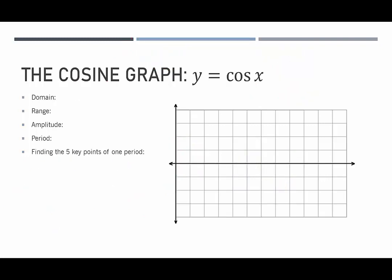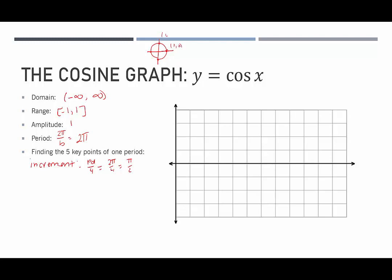Now let's take a look at the parent function of the cosine graph. The domain is negative infinity to infinity — same as our sine graph. The range will also be the same. The amplitude here will be 1, and the period is 2π over b, where b is 1, so the period is 2π. To find the increment for the five key points, we take the period divided by 4: 2π divided by 4 equals π over 2. Remember with cosine, we're looking at the x-values on the unit circle: (1, 0), (0, 1), (−1, 0), and (0, −1).